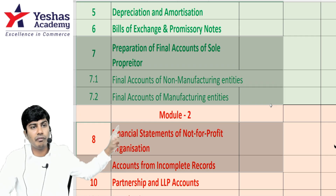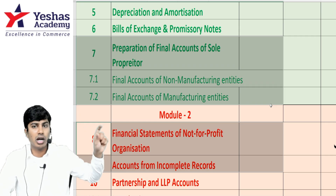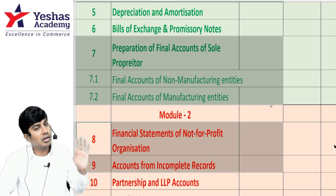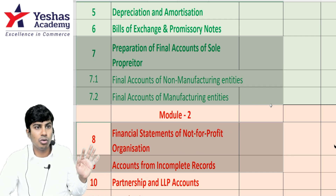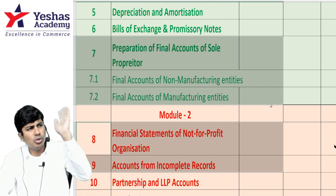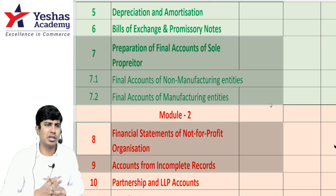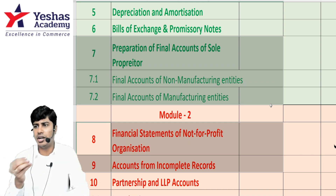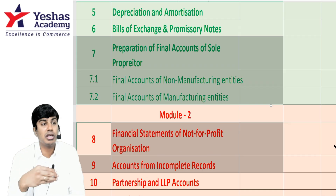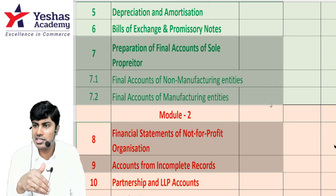Prepare ledger accounts whenever the need arises. Whenever there are outstanding, accrued, or prepaid items, don't do plus-minus — do debit and credit. In QA you do plus-minus, but in accounts you do debit-credit. It is just a psychological factor that makes you feel ledger takes more time and plus-minus takes less — in reality, it does not take more time.